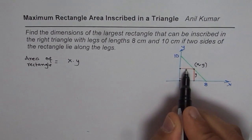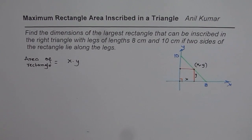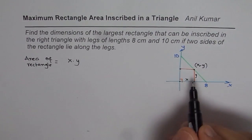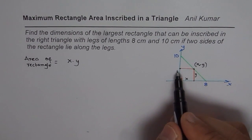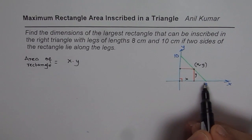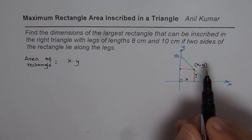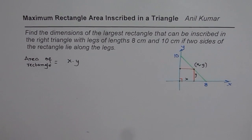The objective is to maximize this area. Whenever you have such an equation, you need to somehow relate the two variables. In this case there are just two. One way to relate them is similar triangles, and another is to find the equation of the line relating the two. We have two different approaches.